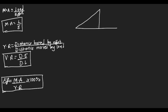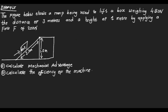From our inclined plane diagram, the slanting line is our length L and the perpendicular one is our height H. If we are told to find the velocity ratio for an inclined plane, velocity ratio equals L over H — where L is the distance moved by the effort and H is the distance moved by the load.